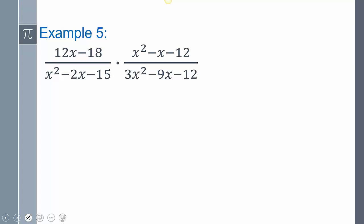Last one. We have to go through and we have to factor. Now, because it's multiplication, I don't have to flip anything. You only have to do that on division. So what's in common on top, it looks like a 6. So you're going to get 2x minus 3. And then factor that using the xbox method. That looks like x minus 5 and x plus 3. And then here we're going to get x minus 4 and x plus 3.